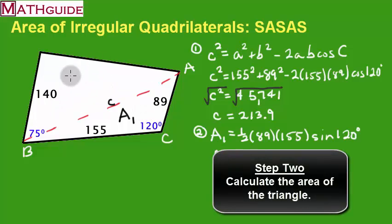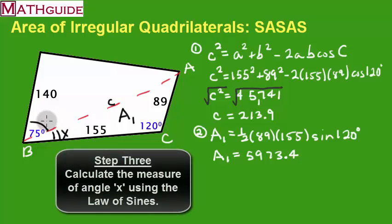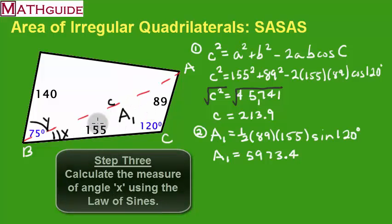Now I also have to find the area of the second triangle. I'd like to use the same formula — two sides and the angle between them. Unfortunately, the 75-degree angle is the entire angle at that vertex, not just the angle between the two sides of the second triangle. I need the angle between those two sides, which I'll call y. To get y, I first need to find angle x using the law of sines on the first triangle.